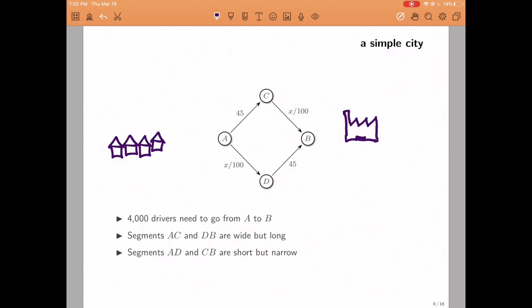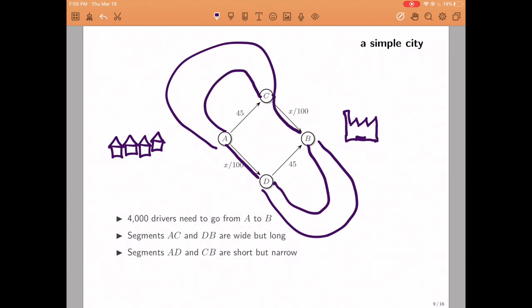There are two routes that they could take to work. They could take a northern route and they could take a southern route. The northern route would be A, C, B and the southern route would be A, D, B. Each route has two segments, one fast segment that always takes 45 minutes no matter what. You can think about this as a very wide highway that doesn't suffer from congestion, but maybe it's a bit of a detour so it goes a long way around.